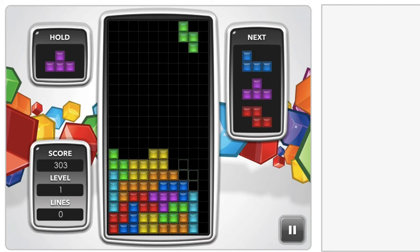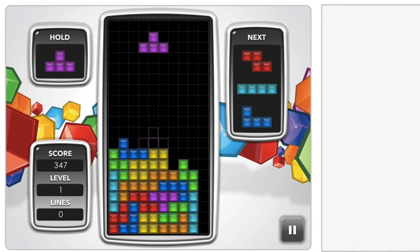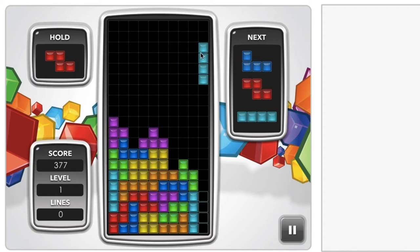So here I'm stacking pieces as fast as possible because as you can see with the score, you can get more points by dropping them faster. Here I have a long bar. Finally I can drop it in the well and get rid of four lines.